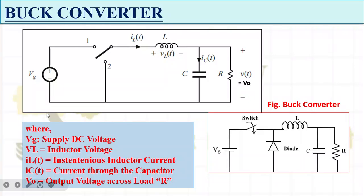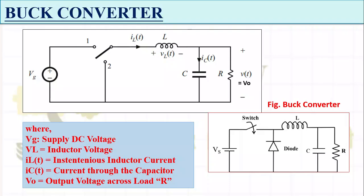The nomenclature: sometimes we write V_T as output and V0 as output — both refer to the same thing, so don't get confused. VG represents the input DC supply voltage.